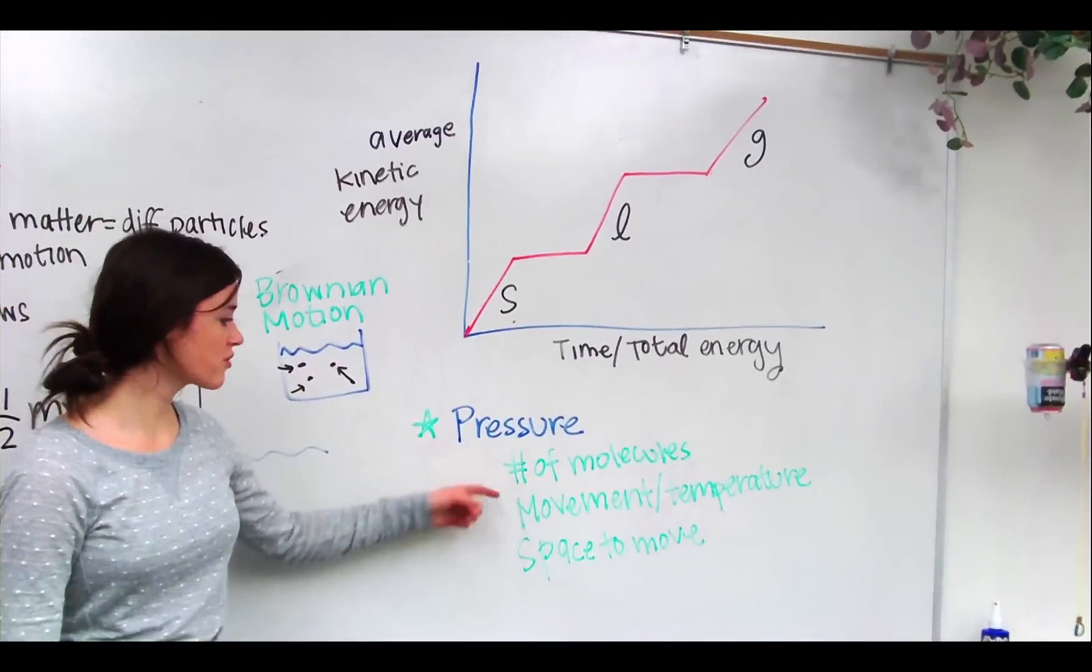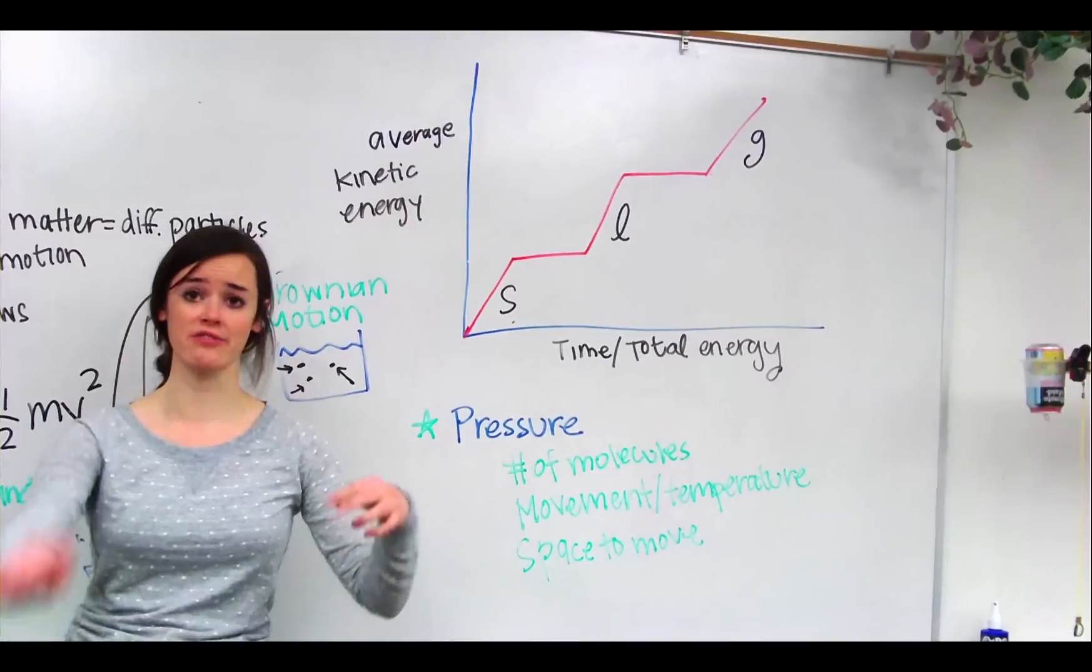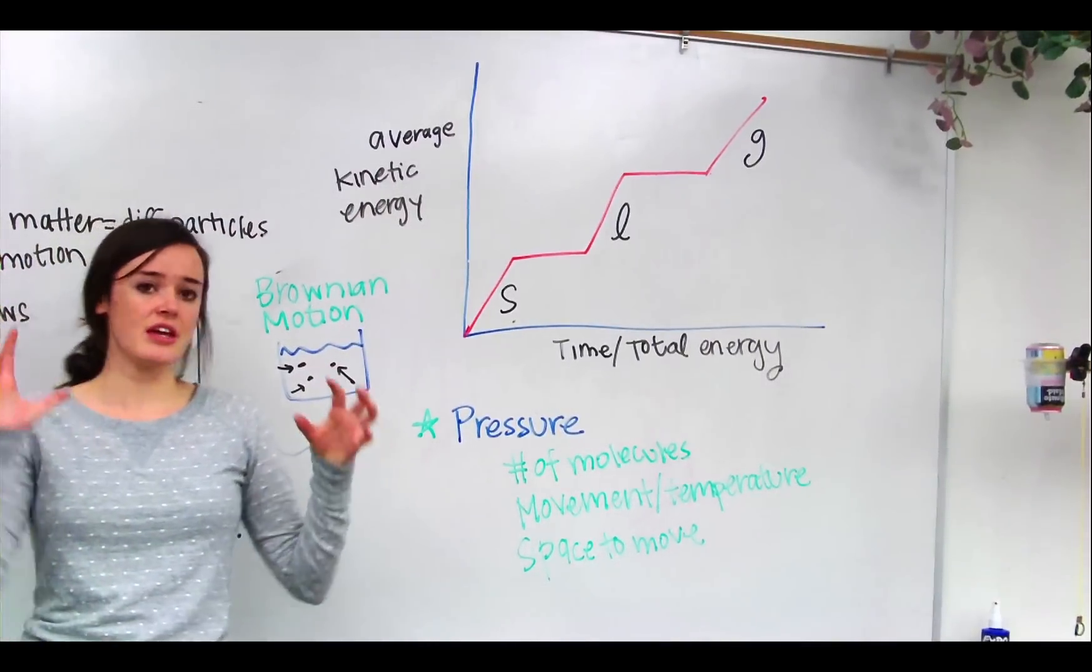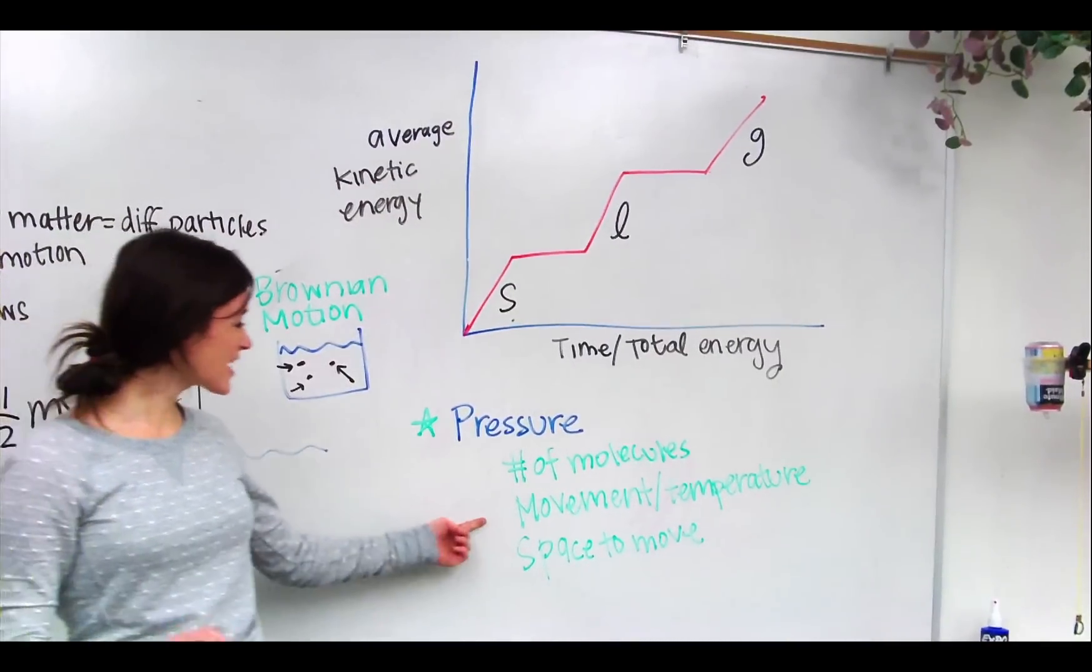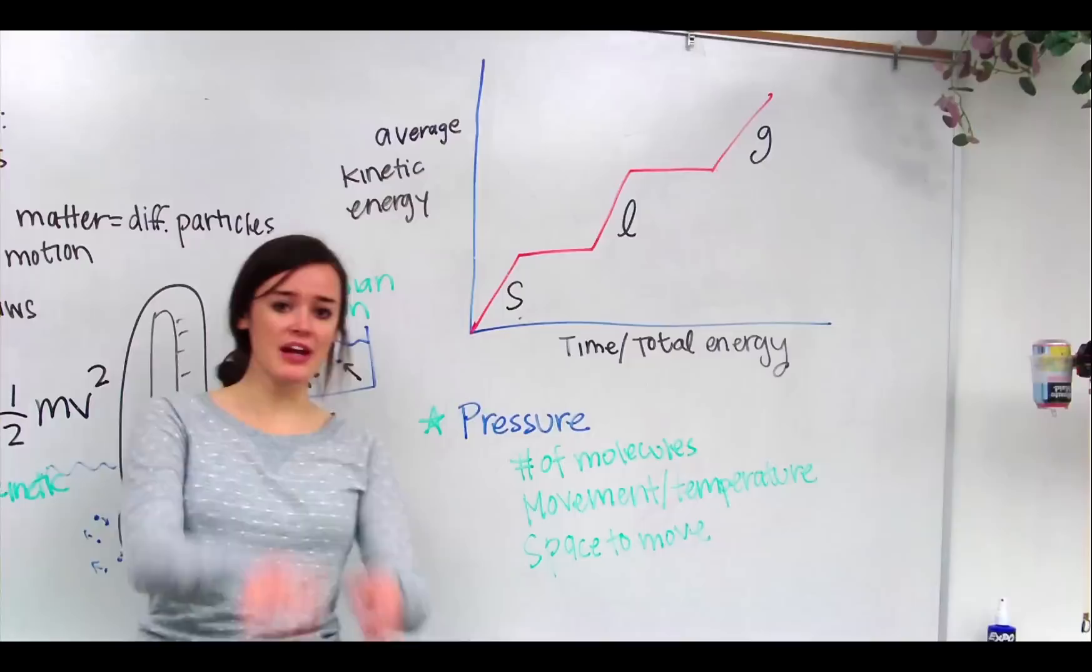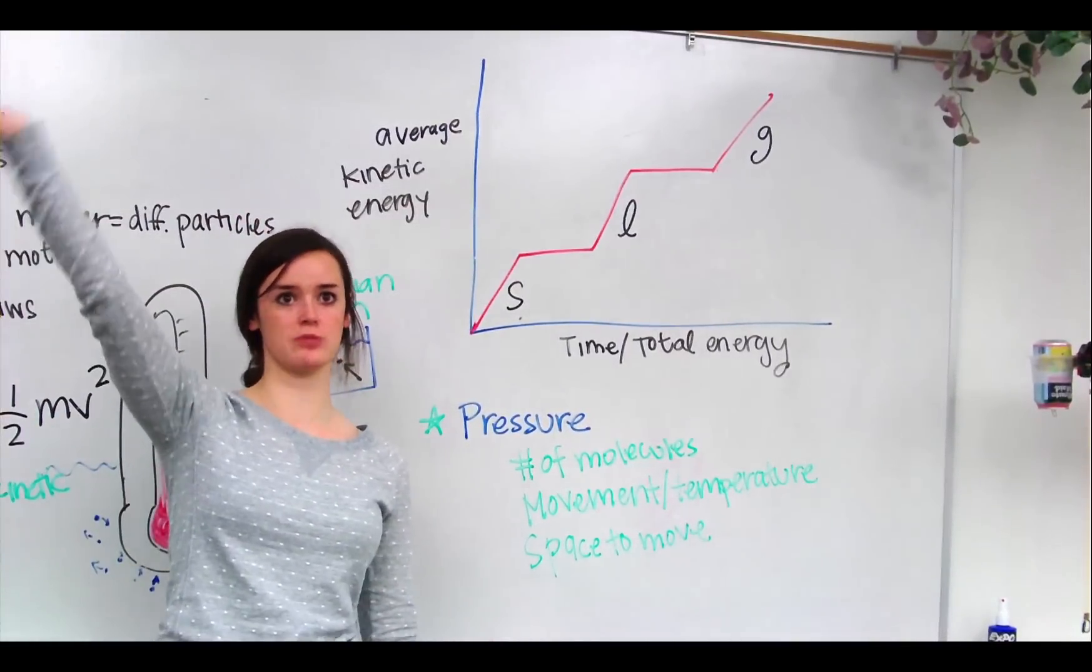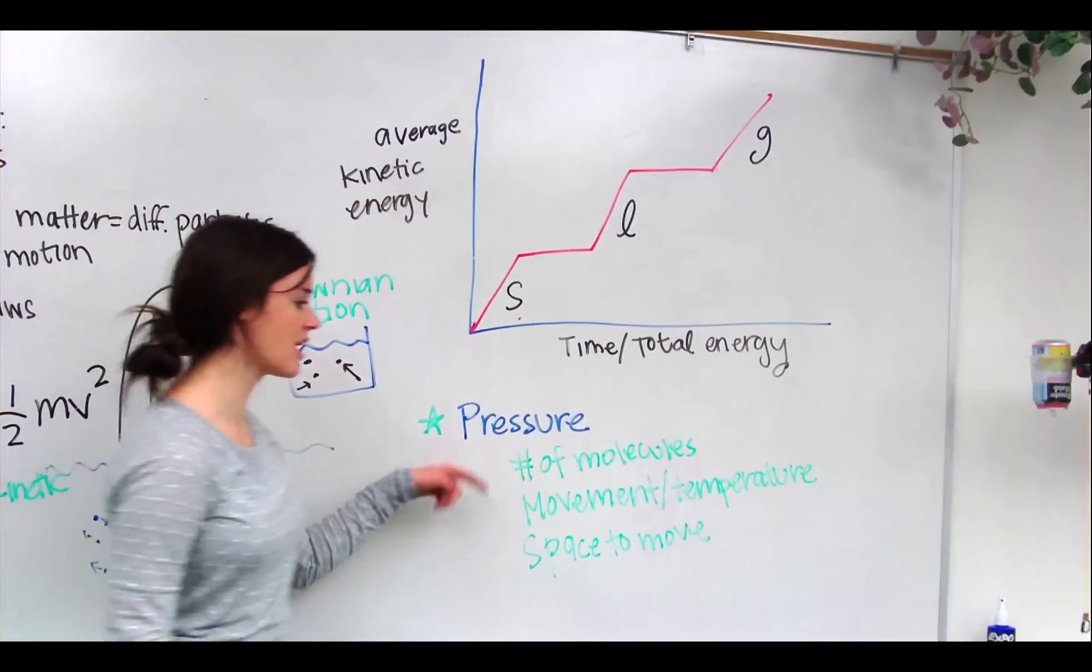Next we're going to move to pressure. So there's a few things that affect the pressure of a gas. The number of molecules is one of them. So if we have more molecules filling up a certain amount of space, there's going to be a greater pressure. There's not as much room for them to move around. The next one is their movement and temperature. If they're moving faster, you're going to have a greater pressure. Also is the space to move. Depending on how much space they have, or if it's being pushed down a lot, if their space is decreased, that's going to increase the pressure and therefore the temperature.